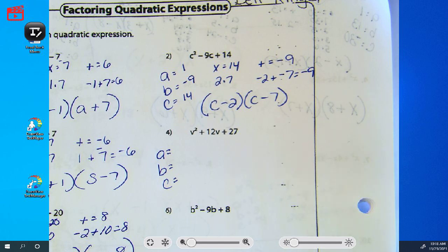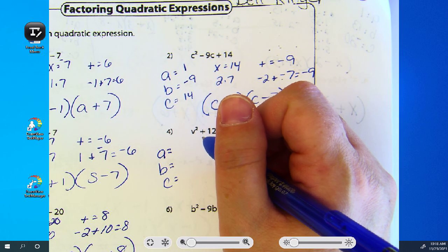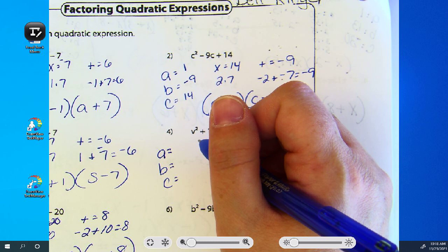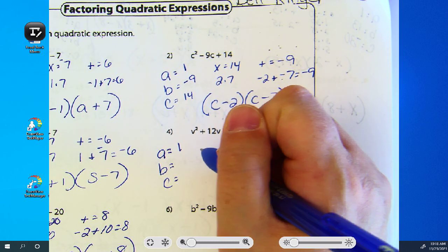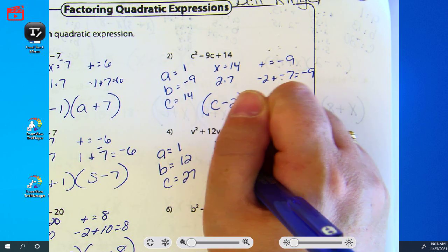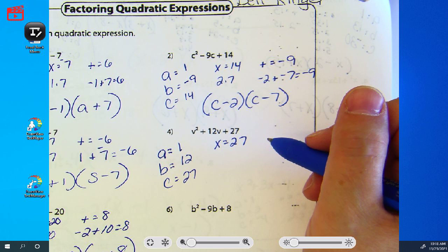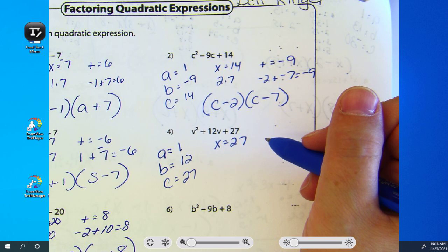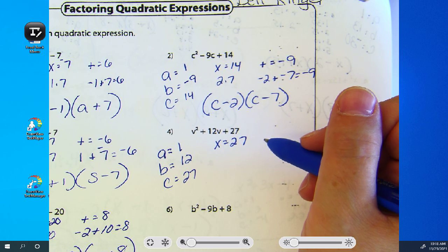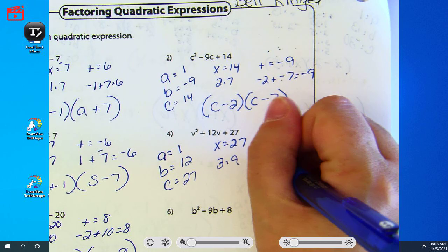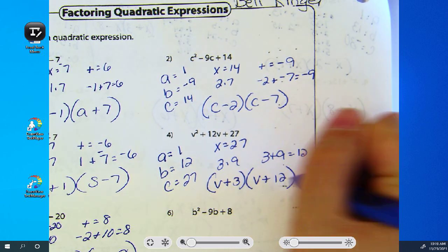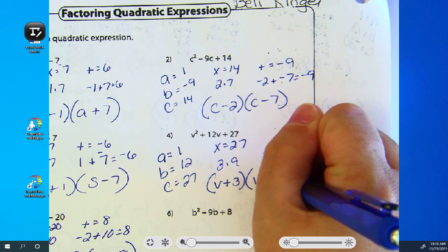Leah, what's A, B, and C? Okay, what did you get to multiply to 27? Okay, yep, and then you're going to add them to get 12. Good. Next one.